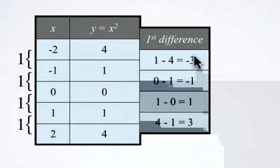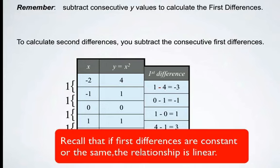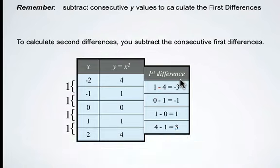Before we go on, notice that the first differences in this situation are not equal. They are not consistent. We know, then, that this is not a linear relationship. And we knew that already. Now, let's calculate the second differences. In order to calculate the second differences, you subtract the consecutive first differences.